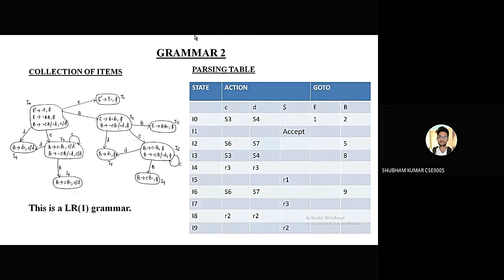In the parse table, we have state, action, and goto. In state, we have I0, I1, and so on. Action is for terminals, and goto is for non-terminals. We have written S3 below C because if you move from I0 to C, we will reach state I3, so we have taken three from there and written S3. Similarly, we have written one below E, but formatting is a little different, so we don't write the alphabetical part here.